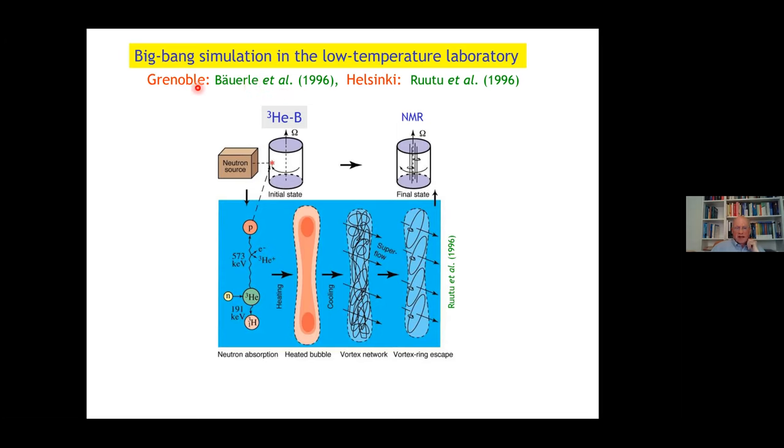Amazingly, the same experiment essentially was done at two different places by two different groups. These people took helium-3B in a rotating container, subjected to a neutron source. A neutron will combine with helium-3, giving tritium and a proton, which go into opposite directions. The kinetic energy leads to heating of the system as a heating bubble. This, when cooling, leads to a vortex network. The vortex rings which reach the outer surface vanish, but the others assemble here in the middle, which is rotating, and where they can be detected by NMR.